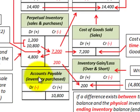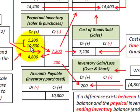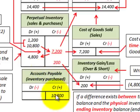One last note: when we purchased this inventory, we debited our inventory account and credited accounts payable — a liability account — for the $10,800 purchase amount, since we assumed the purchase was made on account.